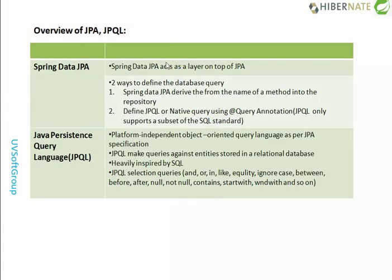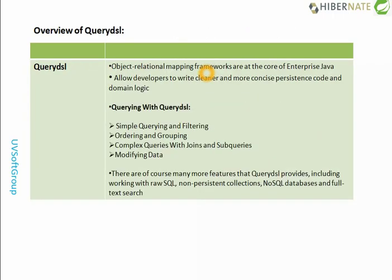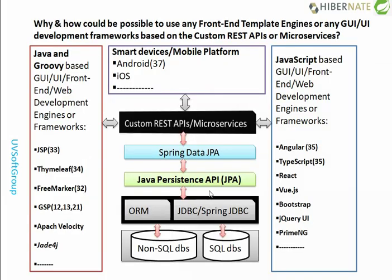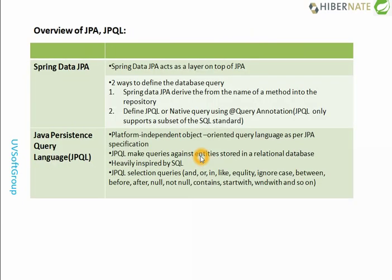Here I try to give an overview of JPA and JPQL. Spring Data JPA acts as a layer on top of the JPA layer. So in the picture shown here, you have JPA layers and on top of the JPA layers sits Spring Data JPA — that's what I mean by the top of the JPA layer.